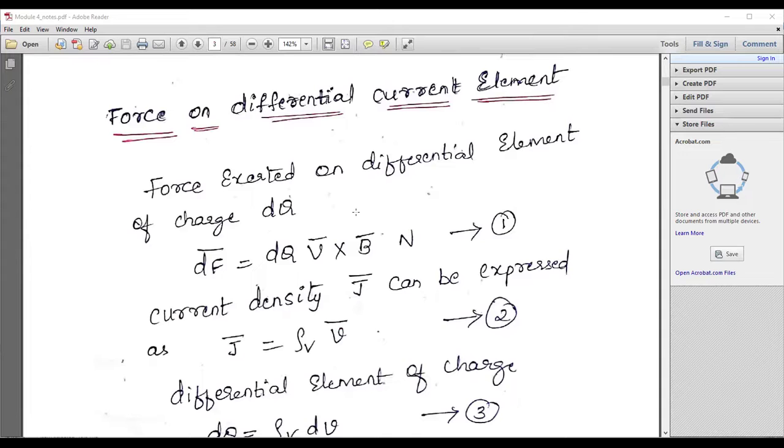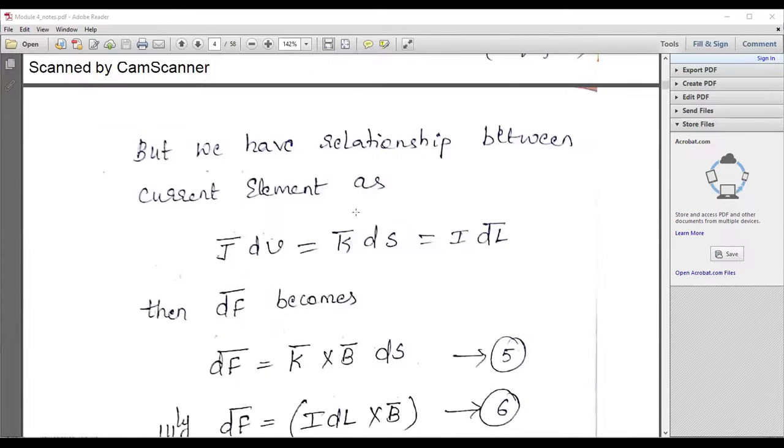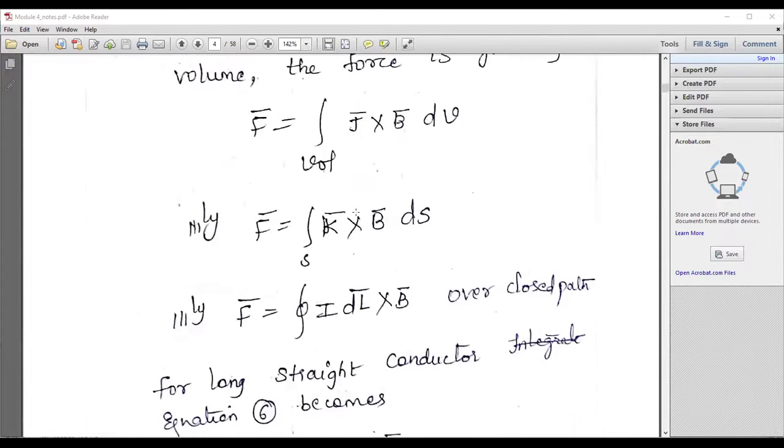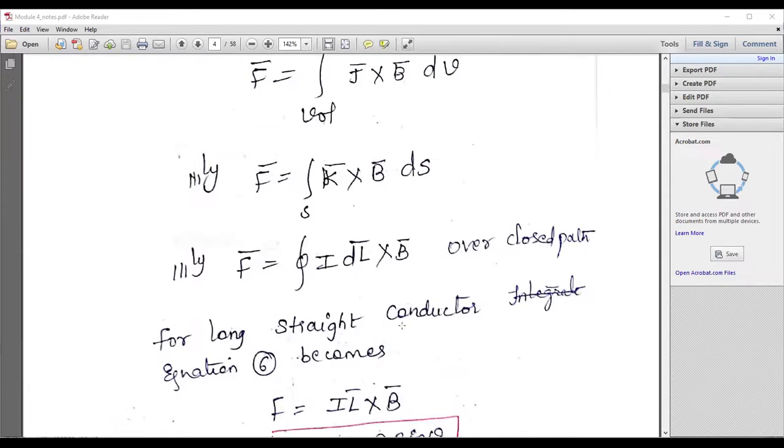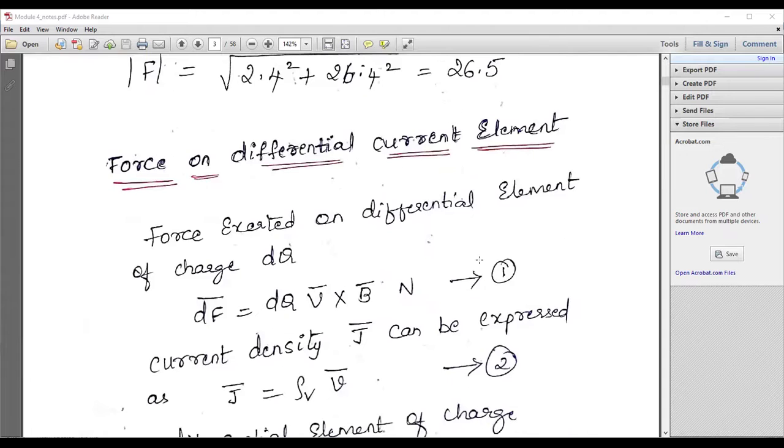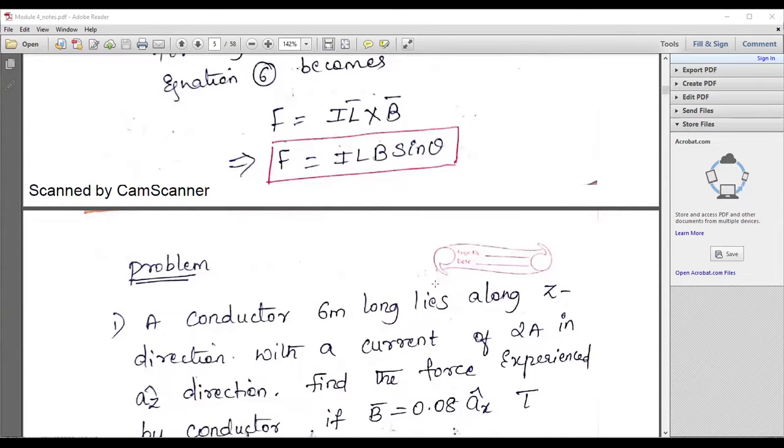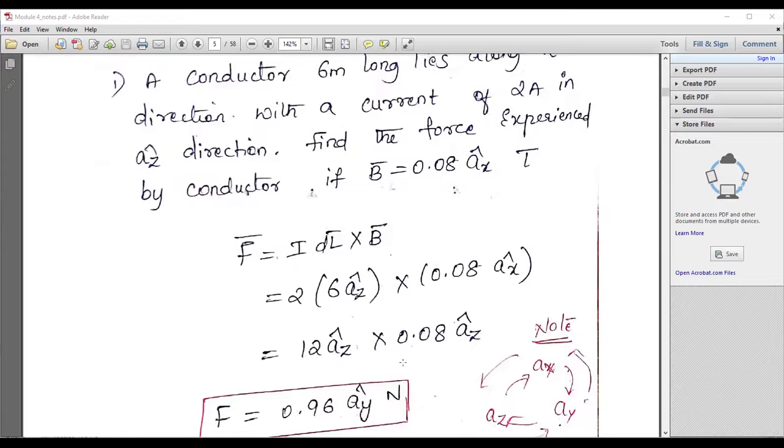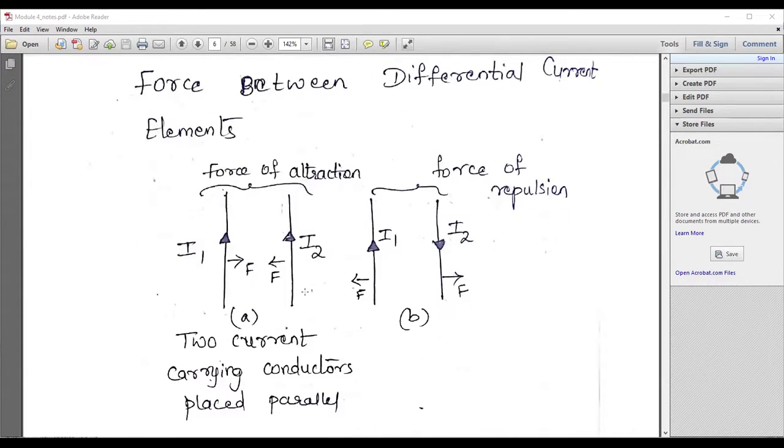Force on differential current element, that is also important. Some small derivation you may get. Ultimately, remember the expression. Expression F equals ILB sin theta. That is very important. Force on differential current element, ultimate expression is BIL sin theta or ILB sin theta. There are numerical examples you can expect regarding the same concept. Please go through this one.